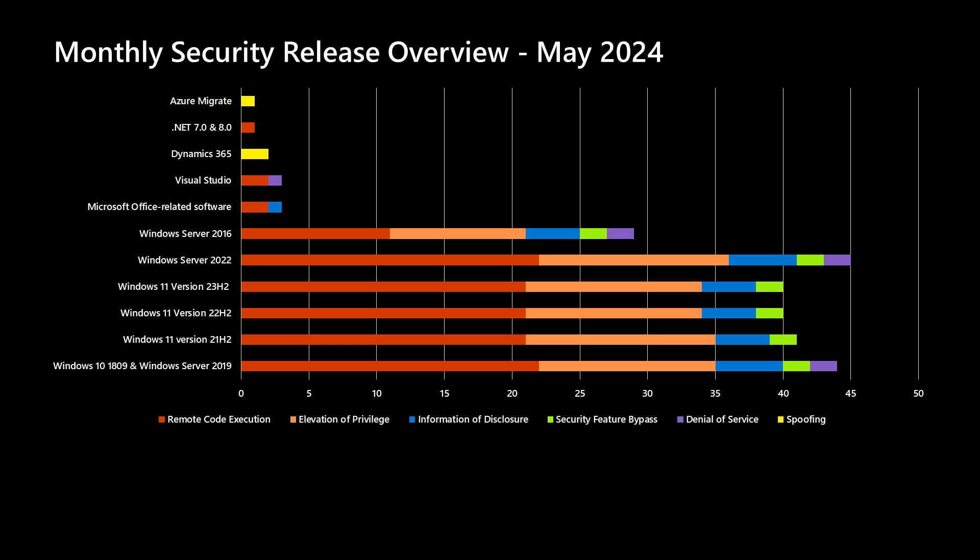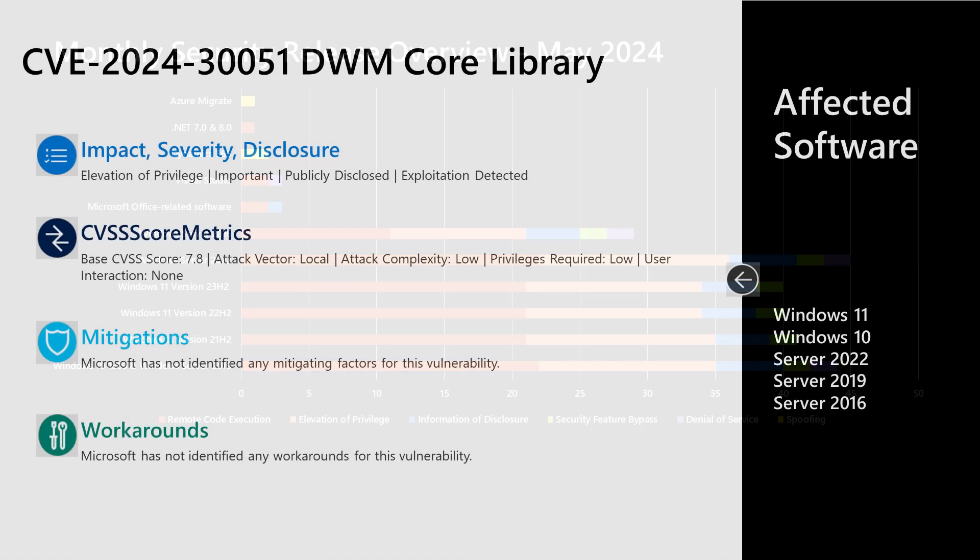As we move up the chart, we get into Microsoft Office-related software, where there are three updates this month. There are a handful of vulnerabilities in Visual Studio — we'll talk about one of those in just a few minutes. Dynamics 365 has two vulnerabilities. .NET 7.0 and 8.0 have a vulnerability this month. And rounding it out for the chart, Azure Migrate has a vulnerability that's being addressed this month.